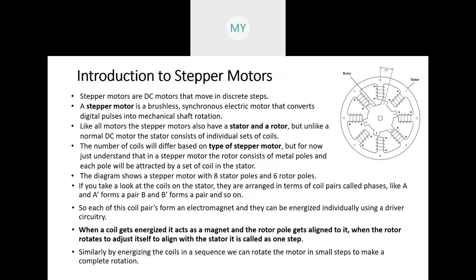Synchronous motors and DC motors cannot move in both directions in this manner. Like all motors, stepper motors have a stator and a rotor, but unlike a normal DC motor, the stator consists of individual types of coils. The stator has individual coils while other motors have only a single coil or two coils.